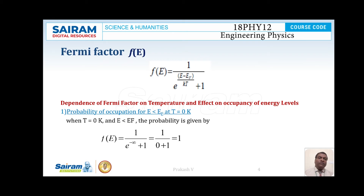Now I am going to explain the dependence of Fermi factor on temperature and its effect on occupancy of energy levels. The first case is the probability of occupation for energy E less than EF at T = 0 Kelvin. When we substitute E < EF and T = 0 in the equation, we get F(E) = 1 / [e^(−∞) + 1], because (E − EF) is negative and any negative value divided by 0 is negative infinity. Since e^(−∞) = 0, we get F(E) = 1 / (0 + 1) = 1.